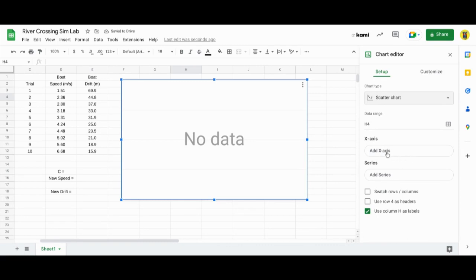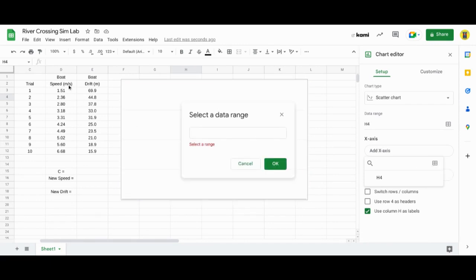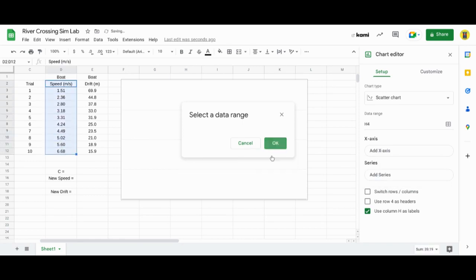Click on add x-axis. When you click this, click this little select data range, this little grid right here. Remember, the speed of the boat is the x-axis. Hit OK.